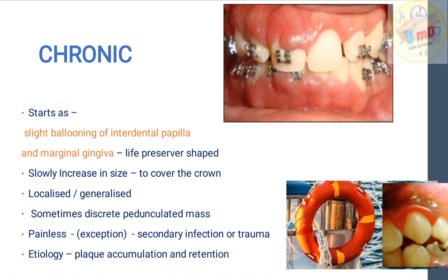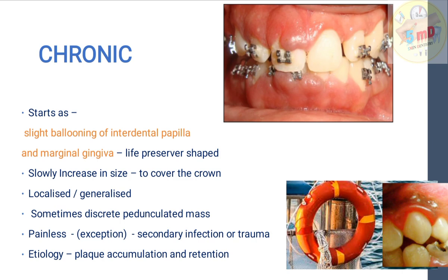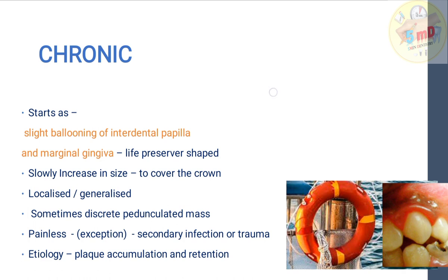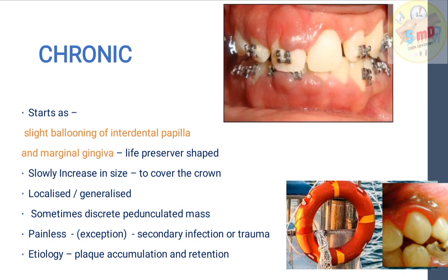In a generalized enlargement, if plaque is involved on one side alone, that side shows gingival enlargement. For example, the patient may be maintaining one side well — without debris or plaque — whereas the other side is not well maintained and shows gingival enlargement. This is a classical example of chronic inflammatory enlargement.